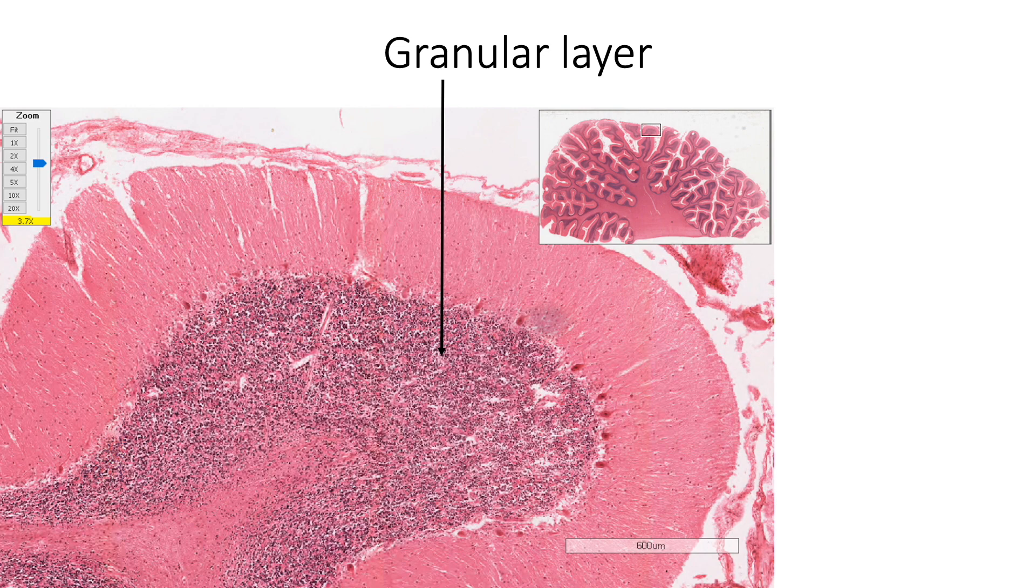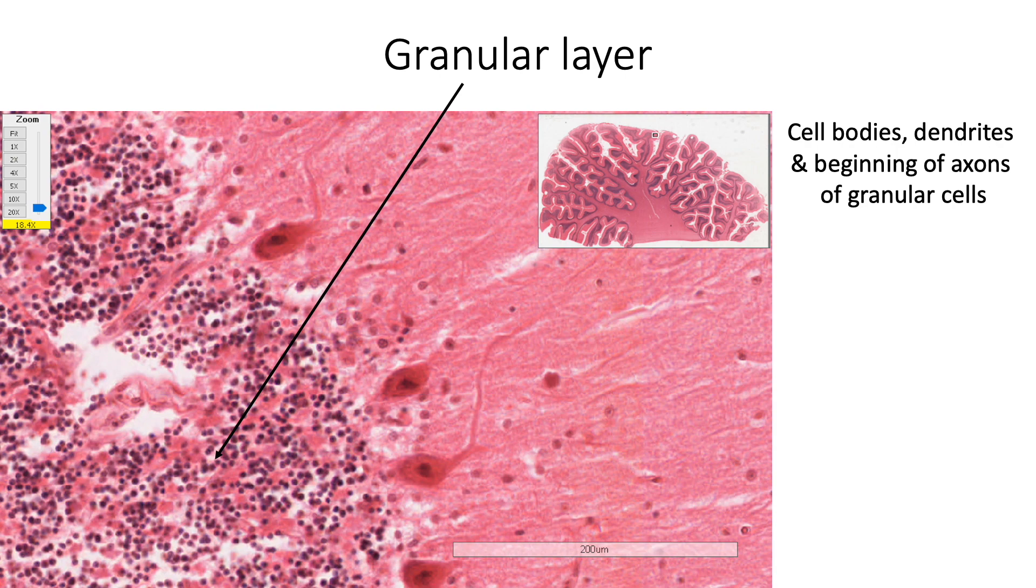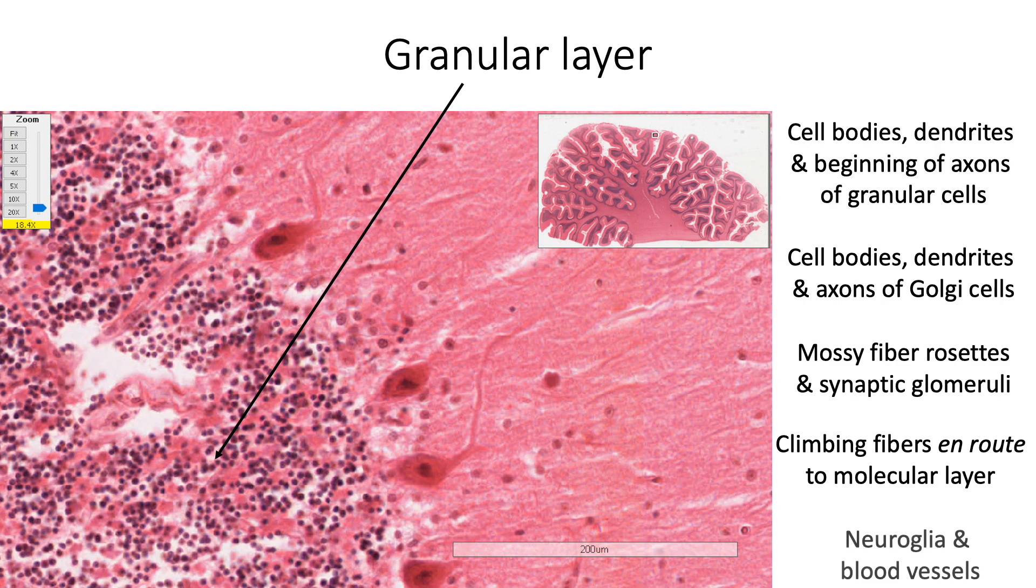This layer consists of cell bodies and dendrites and beginning of the axons of granular cells, cell bodies, dendrites and axons of the Golgi cells, mossy fiber rosettes and synaptic glomeruli, climbing fibers en route to molecular layer along with neuroglia and the blood vessels.